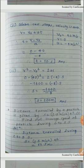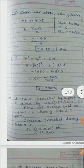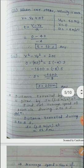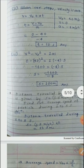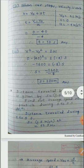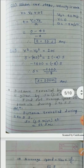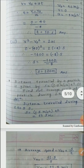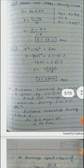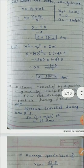Using equation v = v0 + at, therefore t = (v minus v0) divided by a. Substituting: v = 0, v0 = 40, a = minus 4. So t = (0 minus 40) divided by minus 4, which gives t equal to 10 seconds.